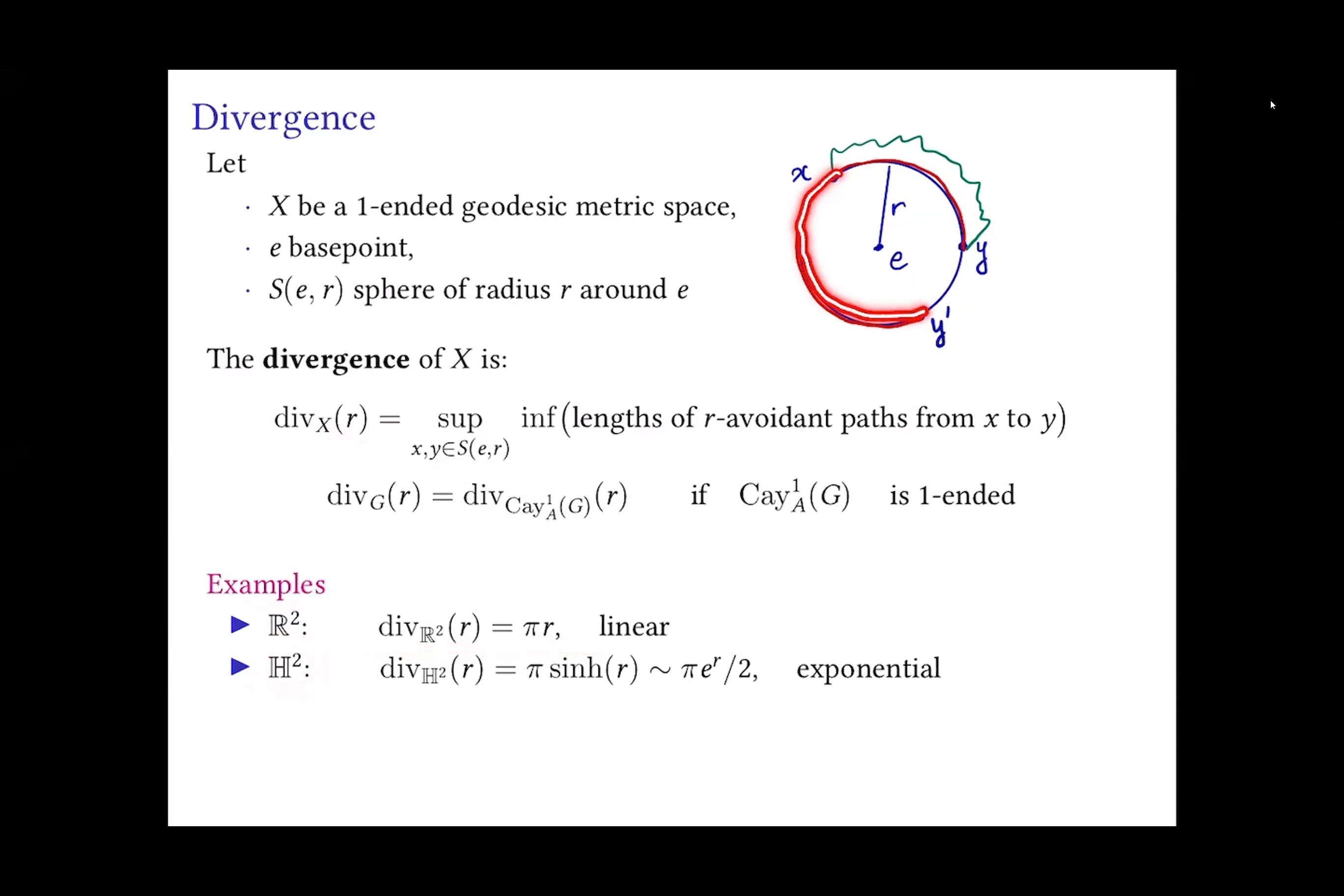If we look at very easy examples, like Euclidean space, R2, Euclidean plane, or hyperbolic plane, we see that divergence in Euclidean plane is linear. It's just half of circumference of a circle of radius R. As a function of R, it is a linear function. And if we draw a circle on the hyperbolic plane, then, as formula from Wikipedia tells us, that circumference of a circle of radius R in hyperbolic plane is given by sinh, hyperbolic sine, which is asymptotic to exponent in R.